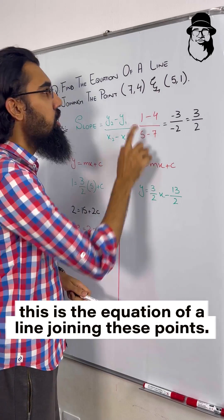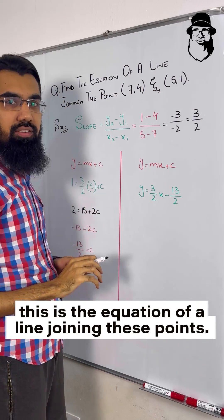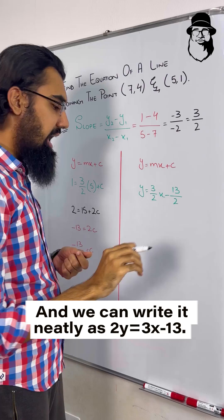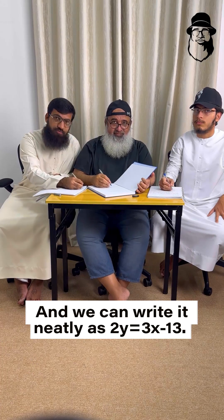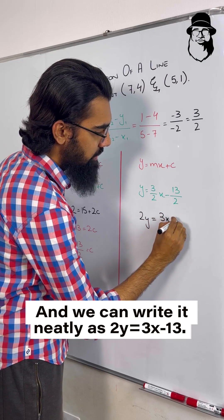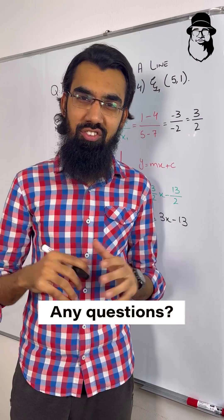Class, this is the equation of a line joining these points, and we can write it neatly as 2y equals 3x minus 30. Any questions?